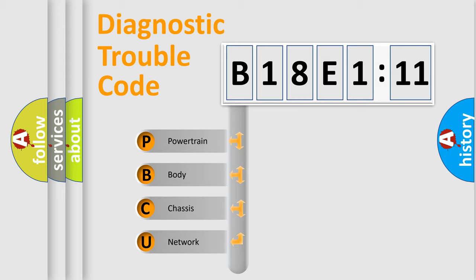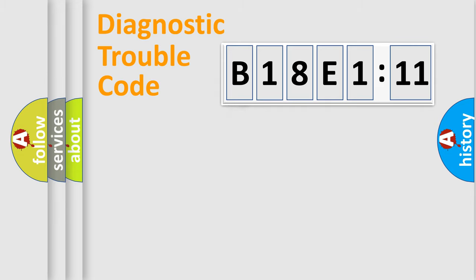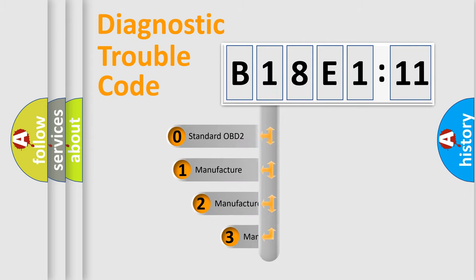We divide the electric system of automobiles into four basic units: Powertrain, Body, Chassis, and Network. This distribution is defined in the first character code.